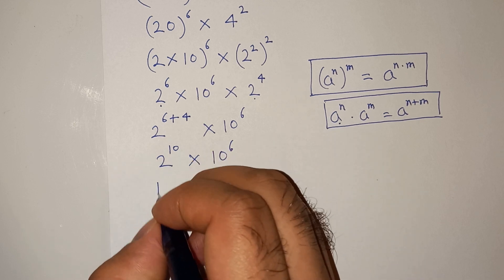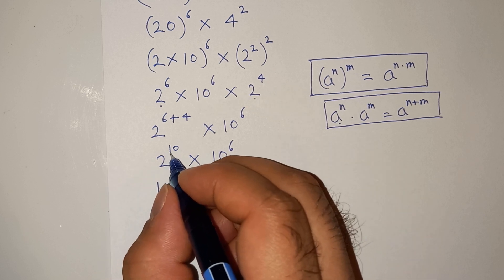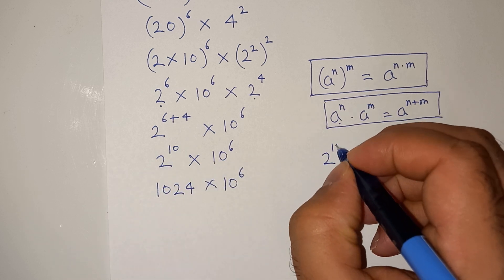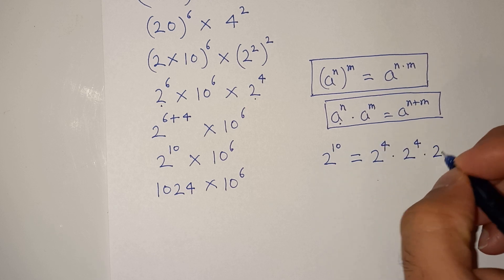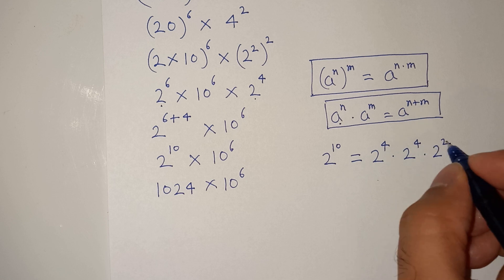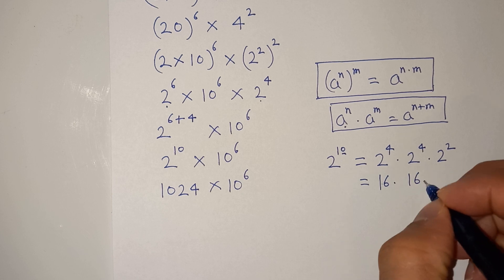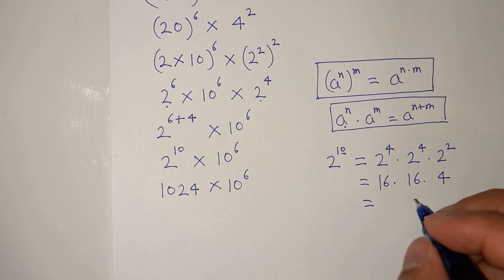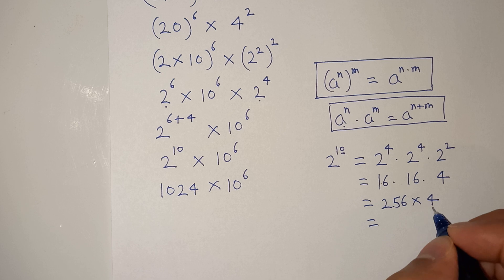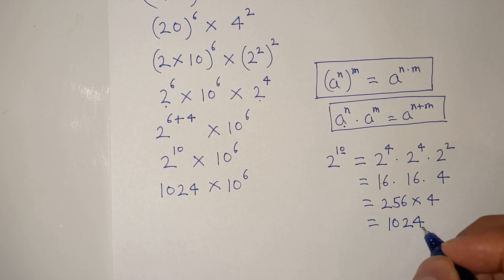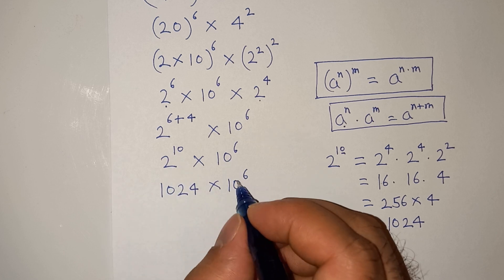So 2 power 10, and the value of 2 power 10 is 1024. To find this, we write 2 power 10 as 2 power 4 multiplied 2 power 4 multiplied 2 power 2, because 4 plus 4 is 8 and 8 plus 2 is 10. Since 2 power 4 is 16, we get 16 multiplied 16 is 256, and 256 multiplied 4 is 1024. That is why 2 power 10 equals 1024, giving us 1024 multiplied 10 power 6.